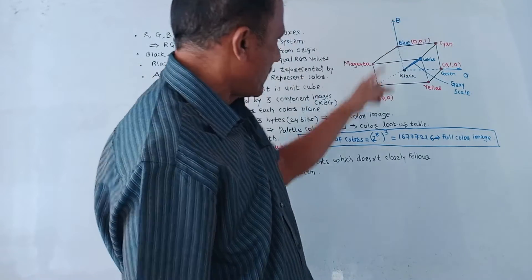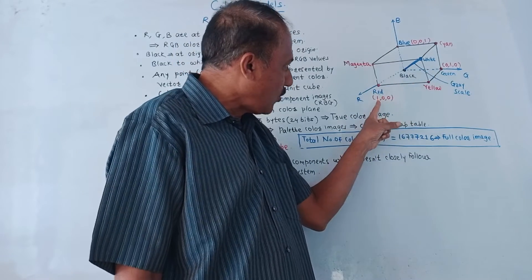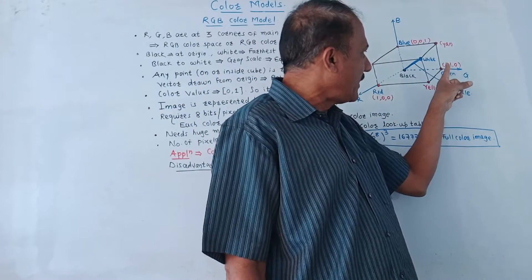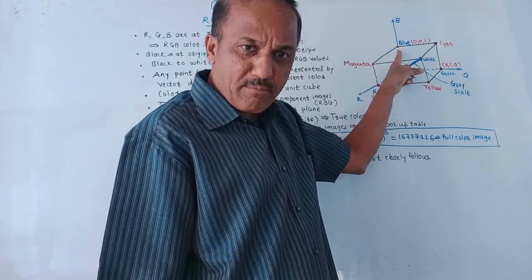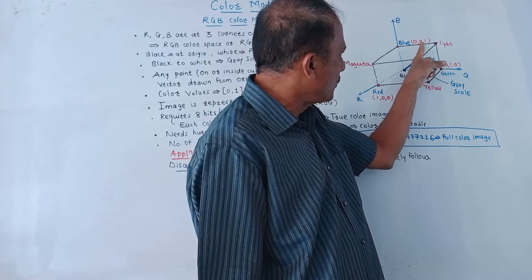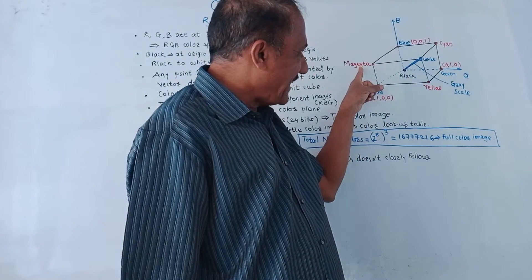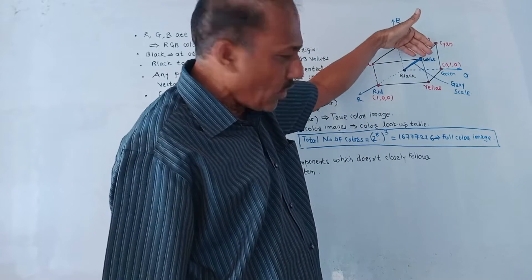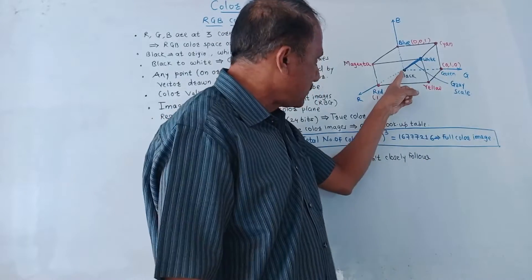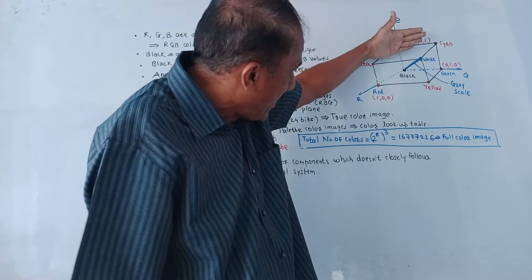The red point is on the r-axis, similar to the x-axis, so its coordinates are (1, 0, 0). For green, it is on the y-axis, that is the g-axis, so the coordinates are (0, 1, 0). For the blue point, it is on the z-axis, that is the blue axis, so its coordinates are (0, 0, 1). The other secondary colors — cyan, yellow, and magenta — are marked at the other corners of this cube. This model is basically a cube, with black color at the origin and white color furthest from the origin.